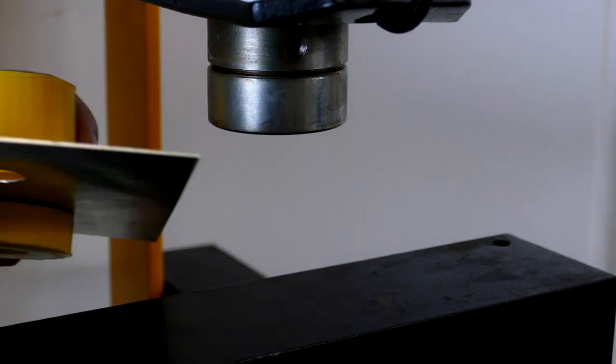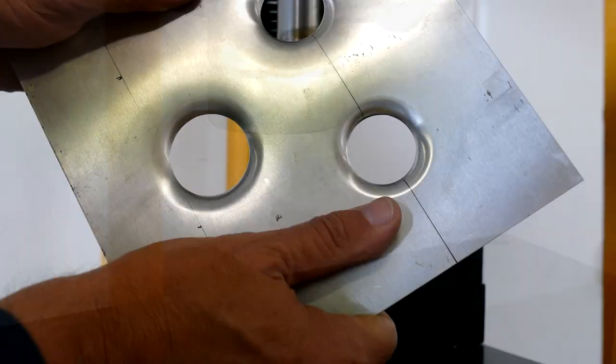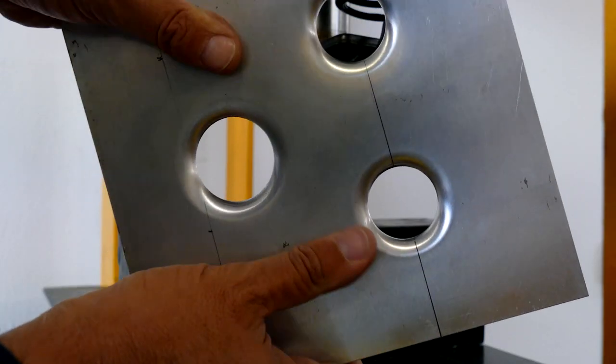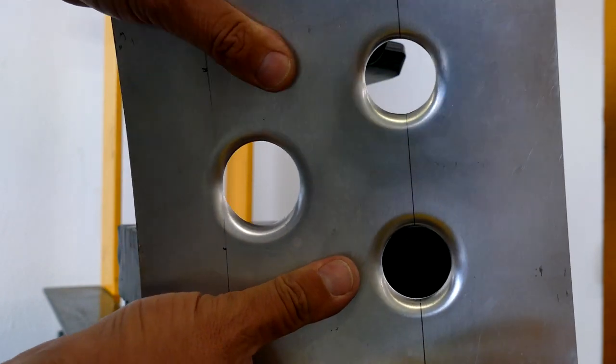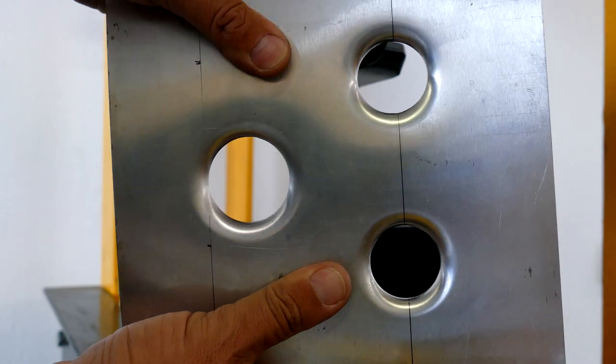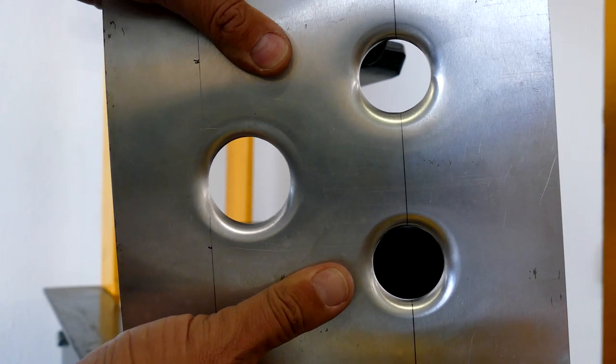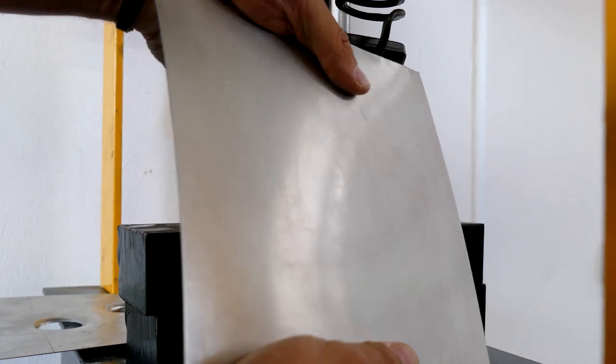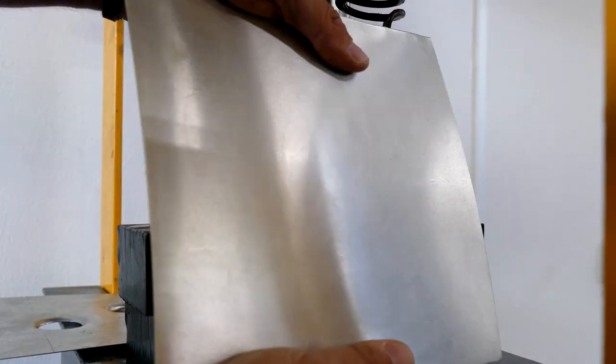Such rounded beads make a metal sheet very stable. The thin sheet shown here can hardly be bent. In comparison, the sheet without the beads is very unstable.